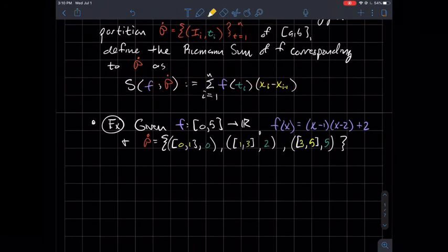Cool, so let's look at an example to really make this definition sink in. Let's say you're given a function f that goes from [0,5] to the real numbers, and the formula for f is (x-1)(x-2)+2. And let's say you're also given this partition where we're going to partition [0,5] into the following subintervals. The subintervals I'm going to have is from 0 to 1 with tag 0, the next subinterval i2 would be 1 to 3 with tag 2, and finally the last subinterval is from 3 to 5 with tag 5. So I have a partition that just has three subintervals, and that's given to me.